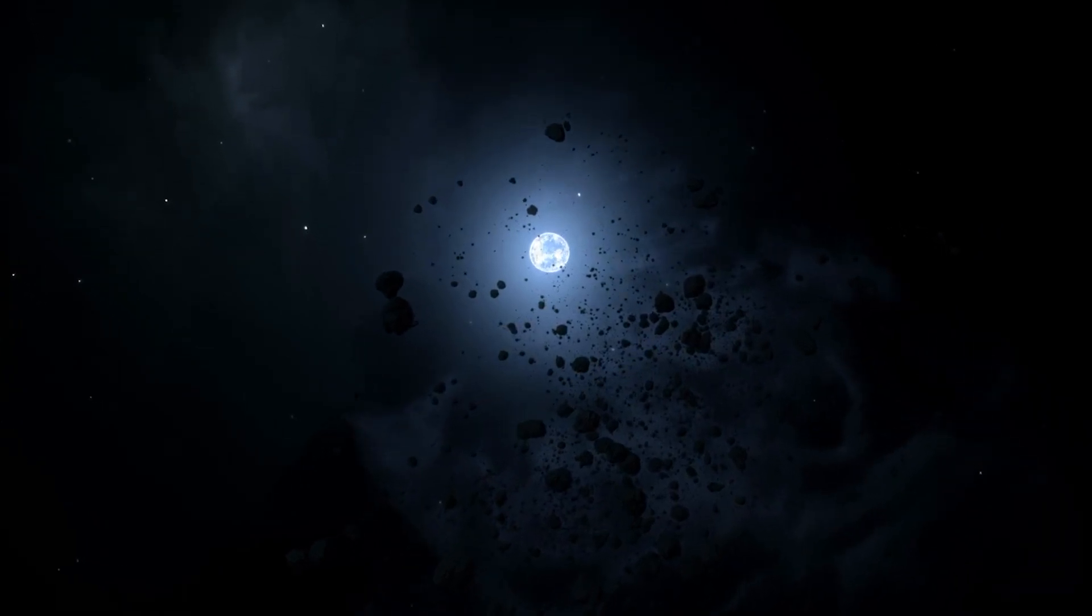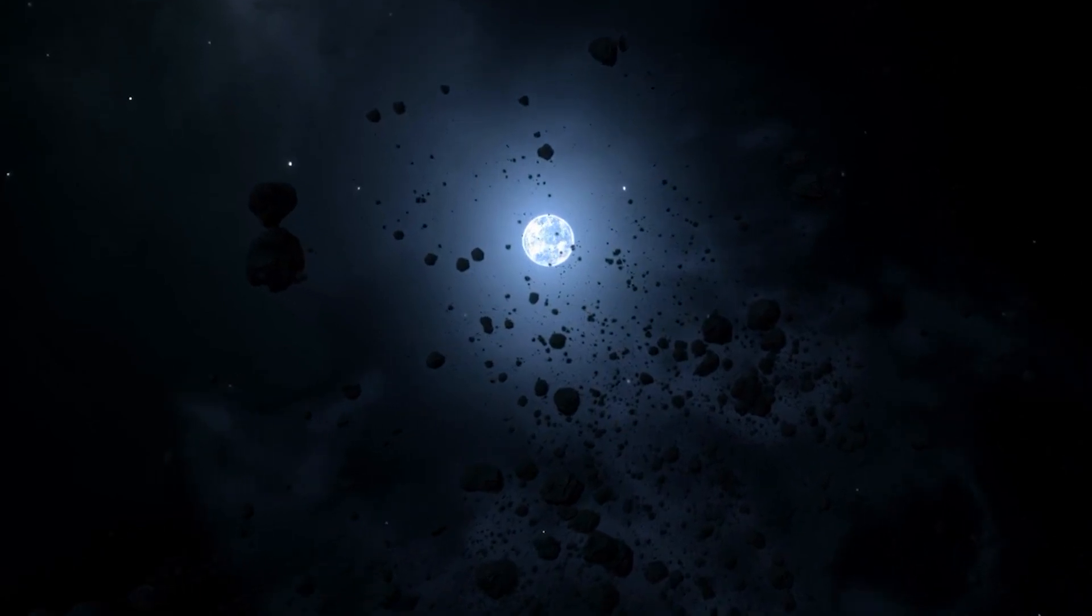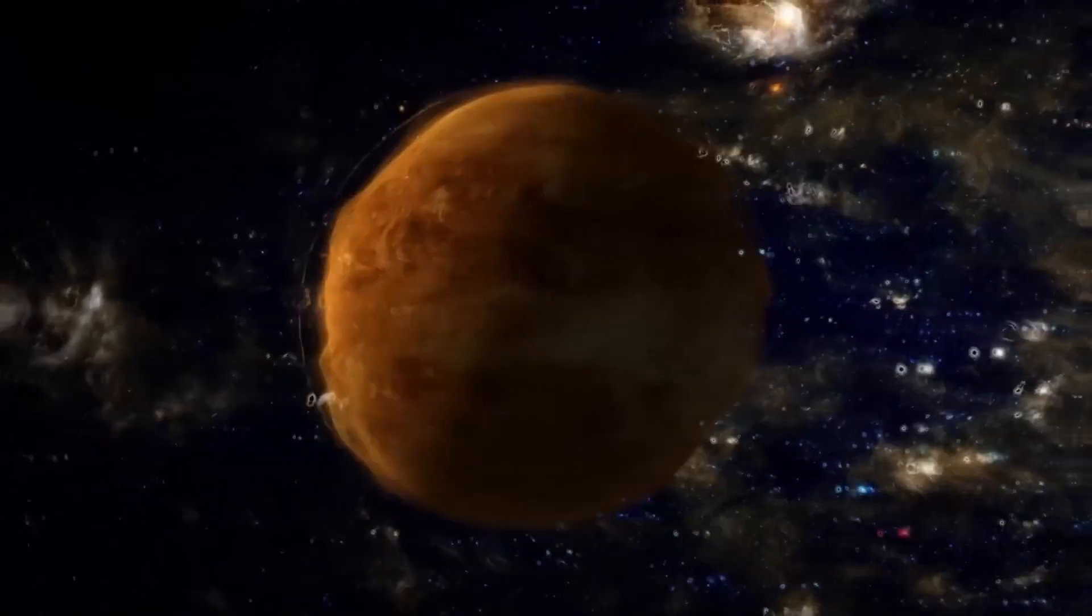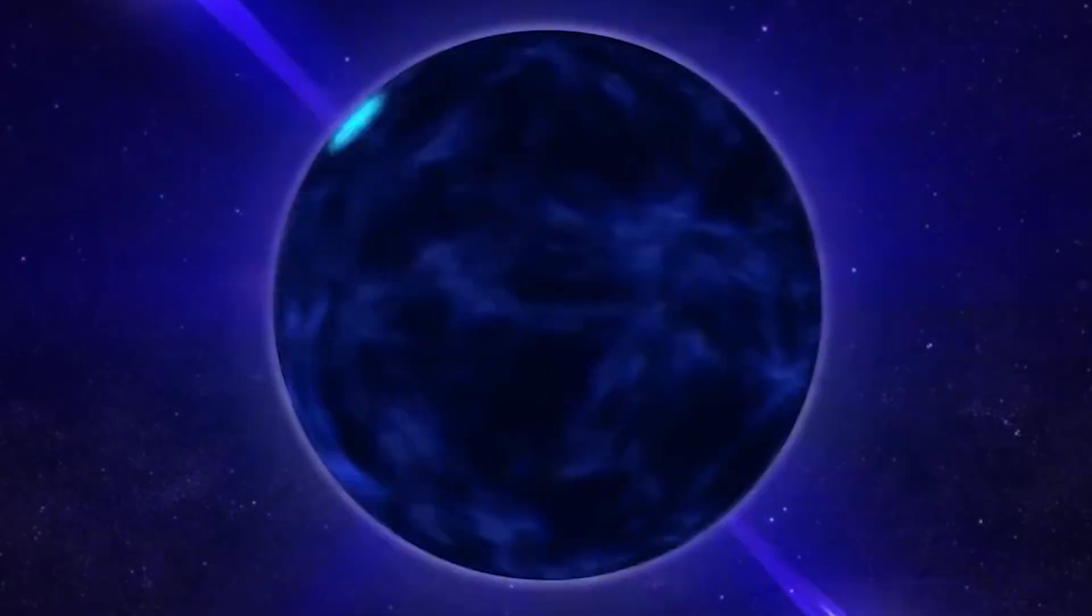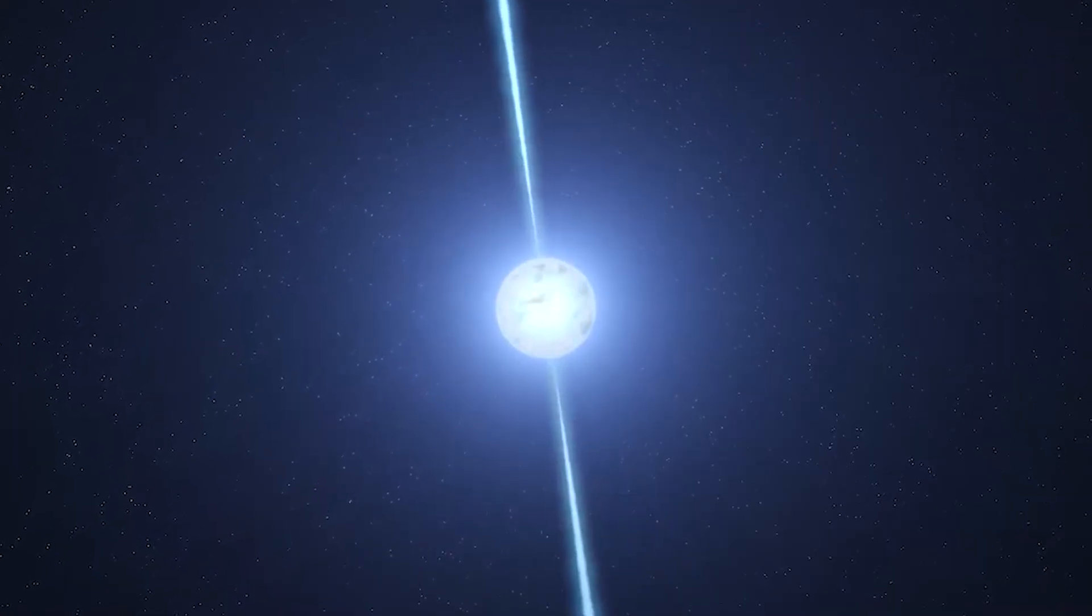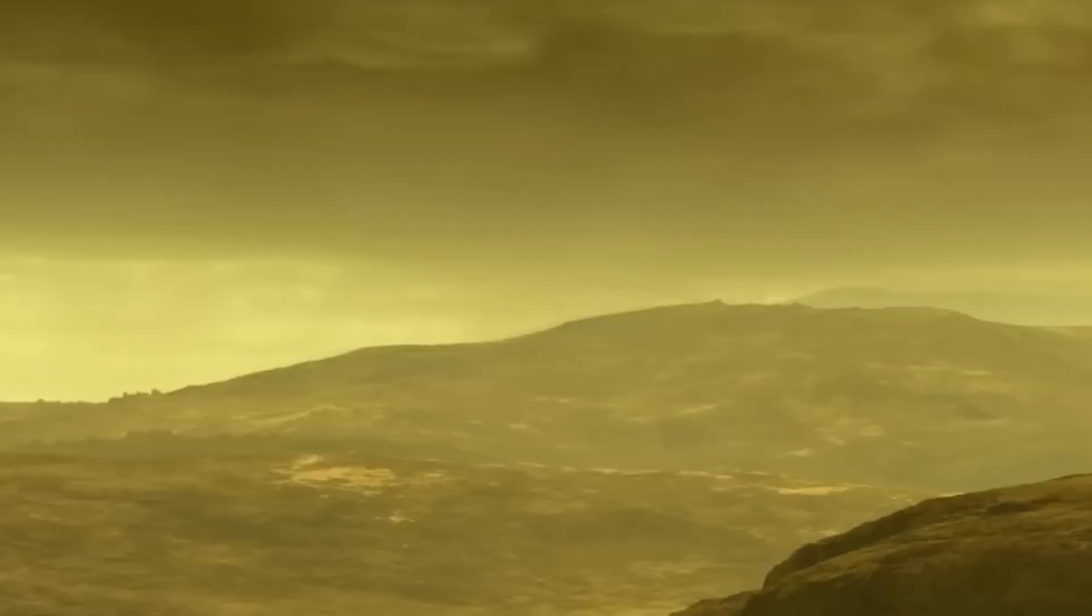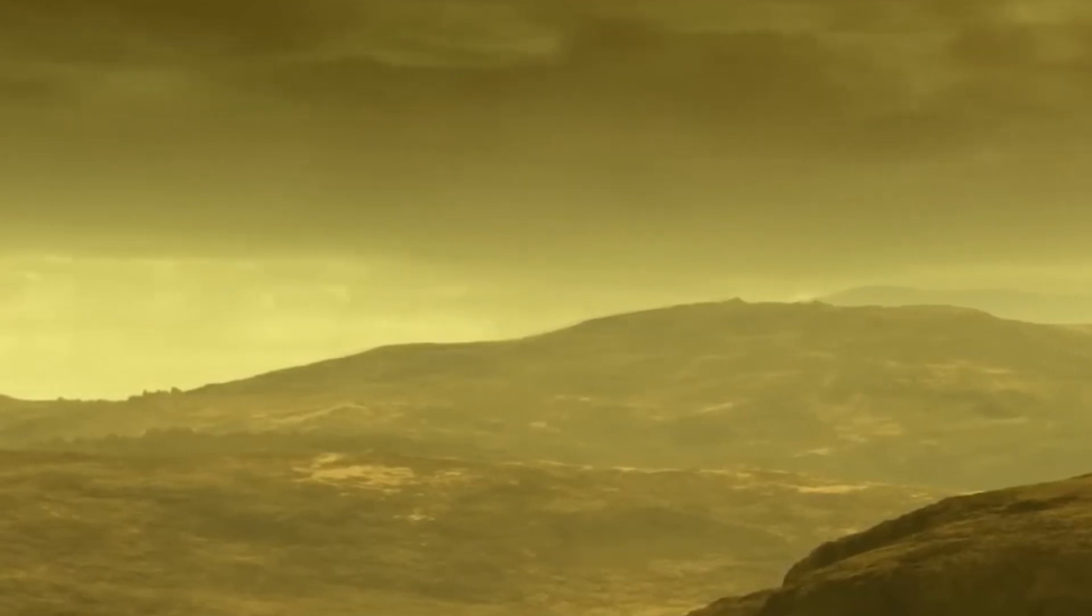While neutron stars may host planets, the intense radiation on these worlds is typically inhospitable for life as we know it. Notably, the first exoplanet discovered by humans orbits a neutron star, specifically a pulsar, with an incredible short orbital period of 6.22 milliseconds, creating a unique and extremely planetary environment.